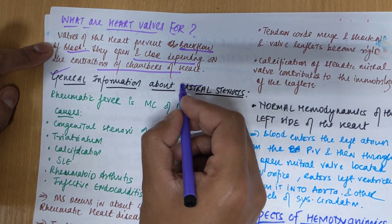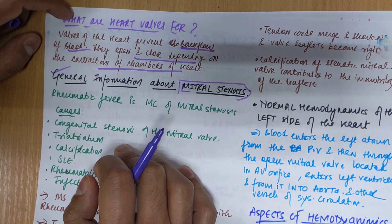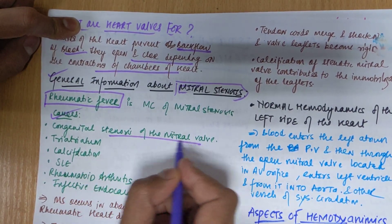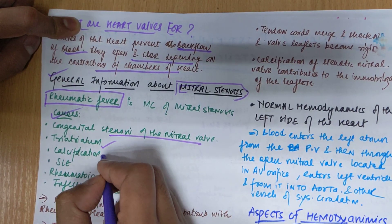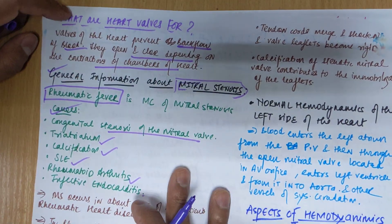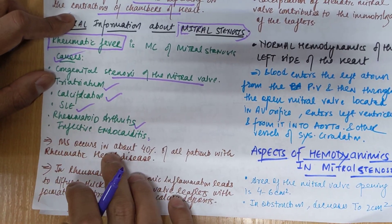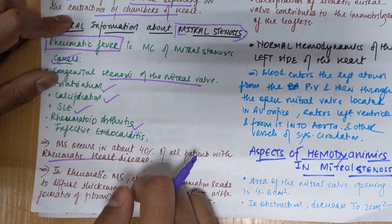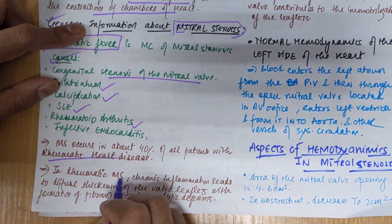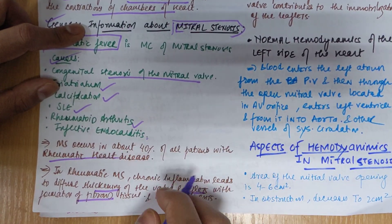Now let's discuss general information about mitral stenosis. The most common cause is rheumatic fever of the heart. Other causes include congenital stenosis of the mitral valve, cor triatriatum, calcification, SLE (systemic lupus erythematosus), rheumatoid arthritis, and infective endocarditis. Mitral stenosis occurs in about 40% of all patients with rheumatic heart disease, where chronic inflammation leads to diffuse thickening of the valve leaflets with formation of fibrous tissue and calcific deposits.